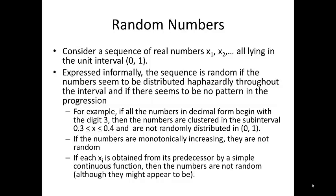For example, if all the numbers in decimal form begin with the digit 3, then the numbers are clustered in the subinterval x goes between 0.3 and 0.4, and they're not randomly distributed in 0,1.